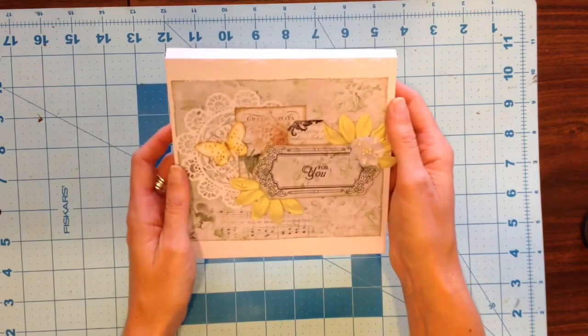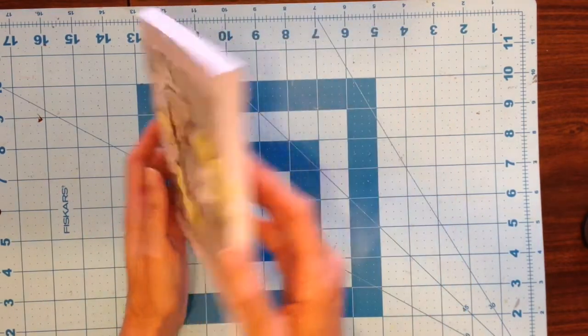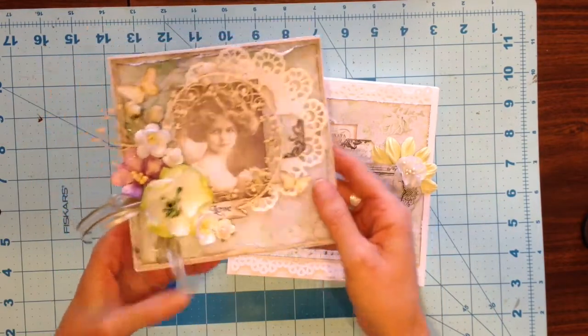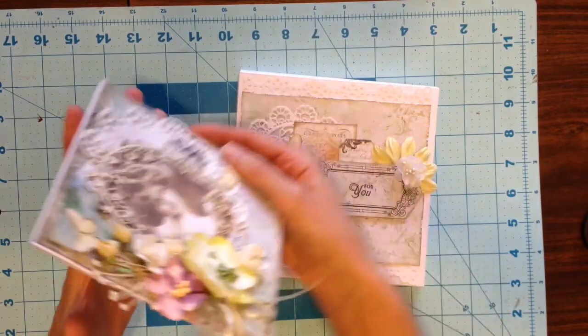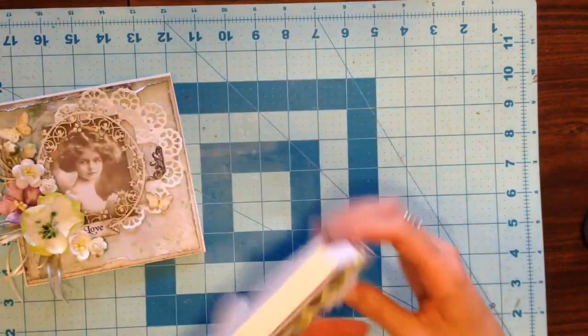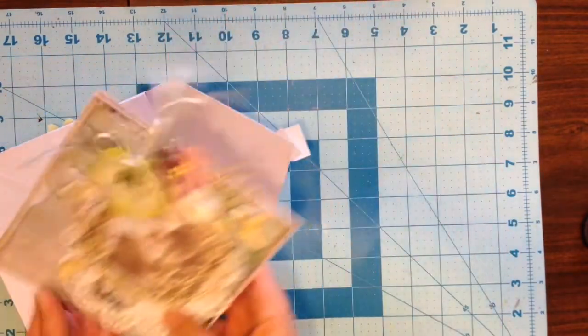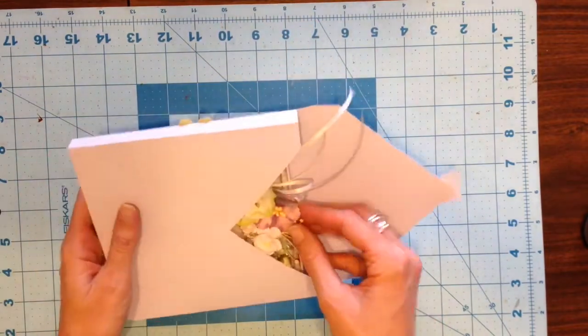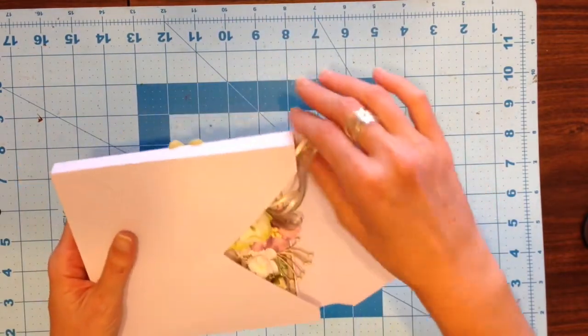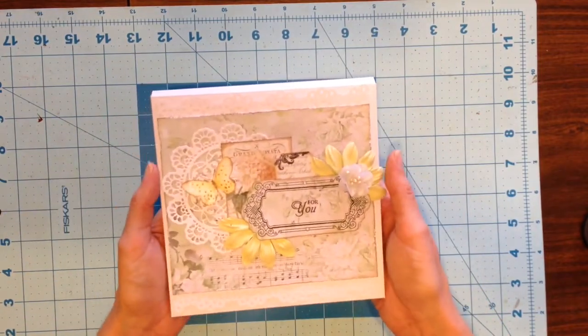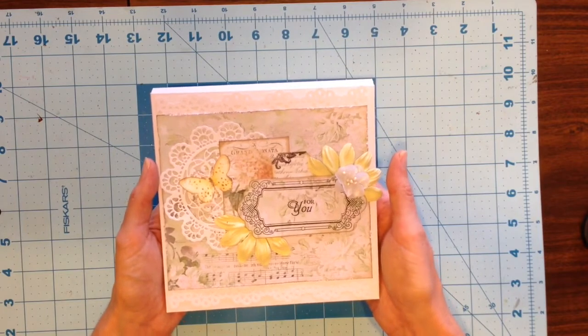This is the box that I'll show you that we'll make today and here's an example of a card that I've just made. As you can see it's quite bulky, it has quite a lot of embellishments, and with this style box you can easily put this card in. What a difference it makes in being able to create a box and give this to the recipient as opposed to a boring old plain envelope.